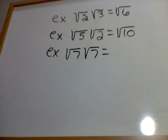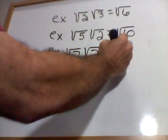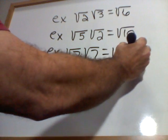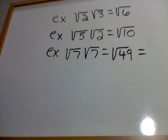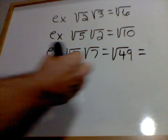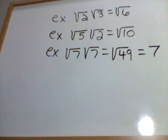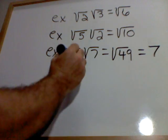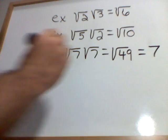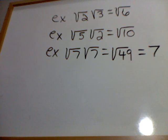Square root of 7 times square root of 7 equals square root of 49 under the radical. But I know the square root of 49 equals 7. Therefore, a radical times itself equals the number that was under that radical.